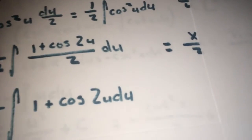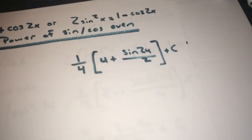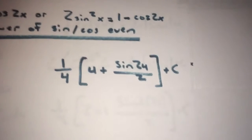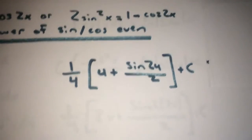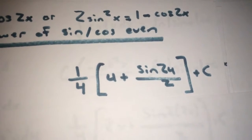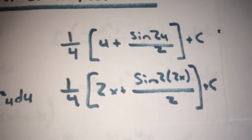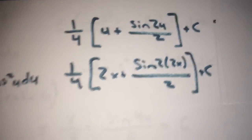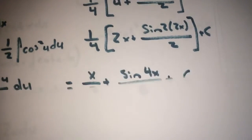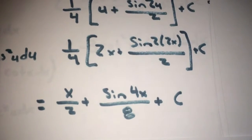From there, I did u-substitution again on the cosine 2u term. That gives one fourth times u plus sine 2u over 2, plus c. Plugging back in u equals 2x gives one fourth times 2x plus sine(4x) over 2, plus c. Simplifying, the final answer is x over 2 plus sine 4x over 8, plus c.